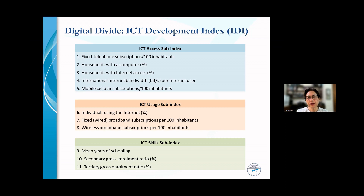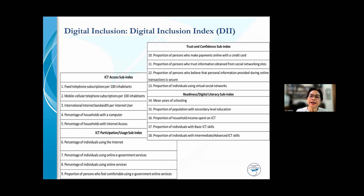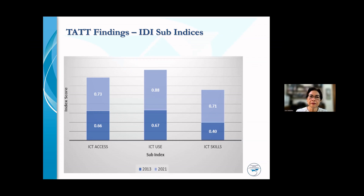We traditionally measure the digital divide using the ICT Development Index, IDI, which comprises three sub-indices: ICT access, usage, and skills, each broken down into a number of indicators such as fixed telephone subscriptions per 100 inhabitants, individuals using the internet, and mean years of schooling. More recently, the interest is in digital inclusion measured using the Digital Inclusion Index, DII, which includes four sub-indices: ICT access, ICT participation and usage, trust and confidence, and readiness for digital literacy.